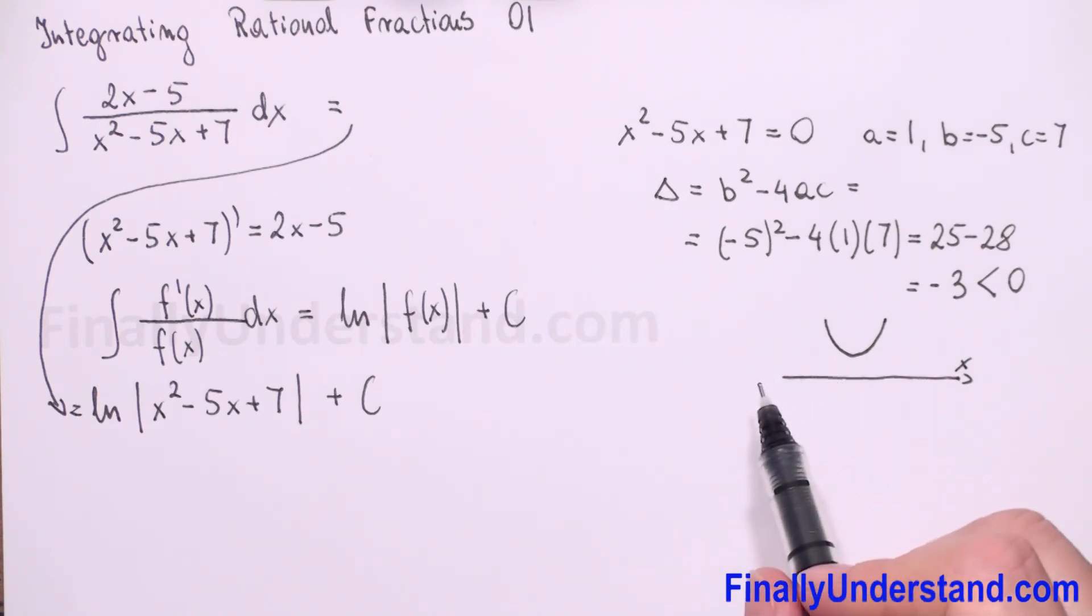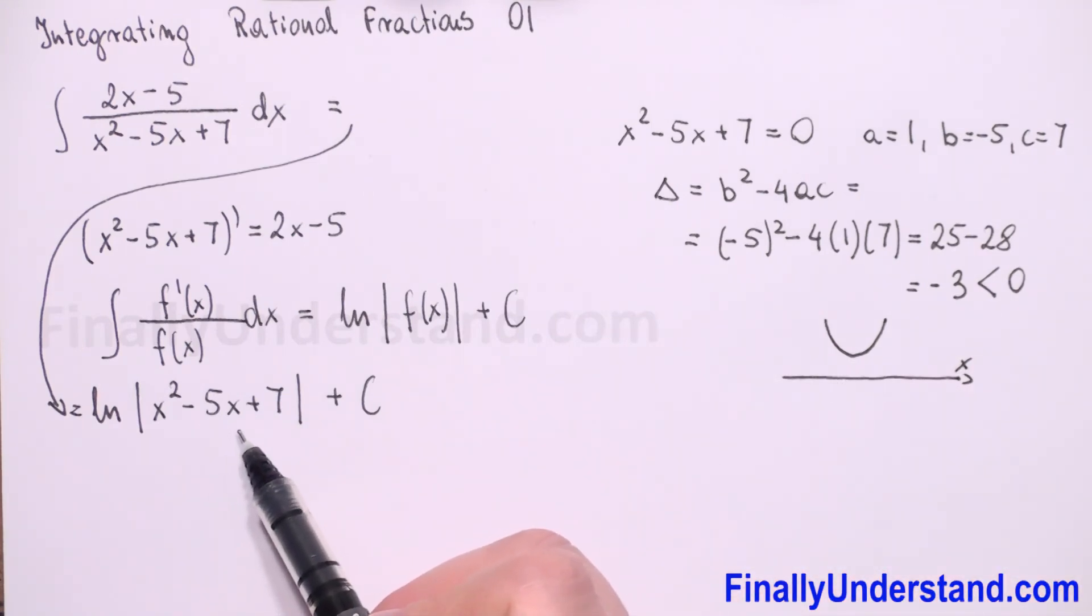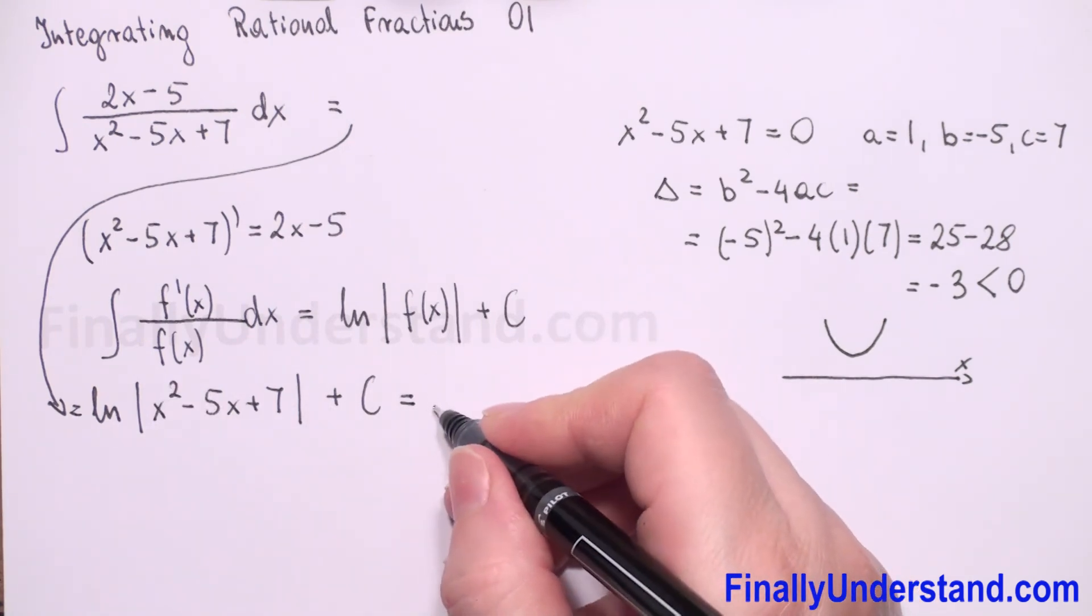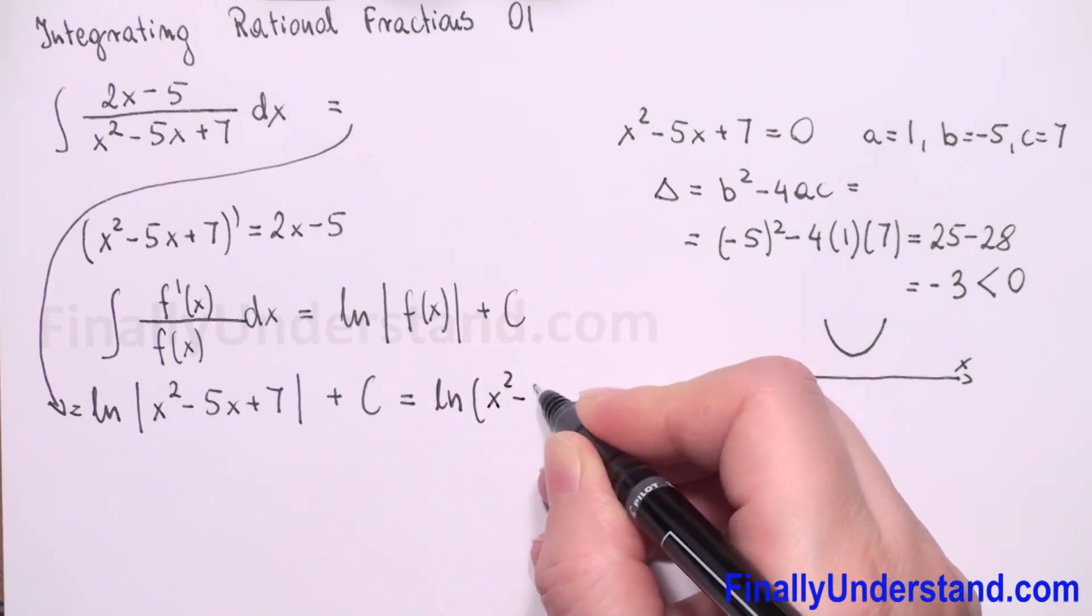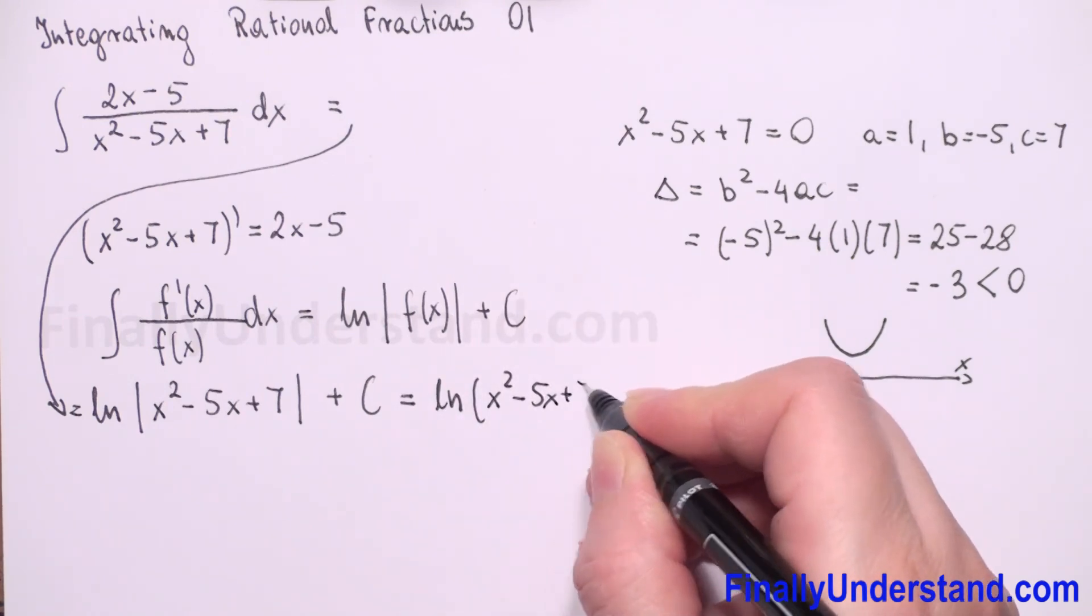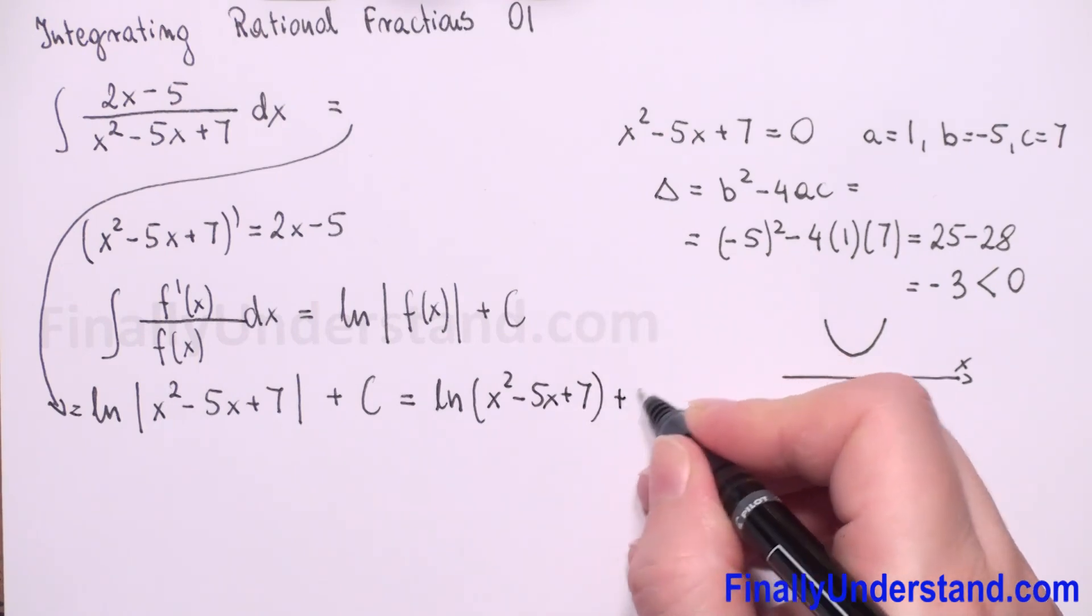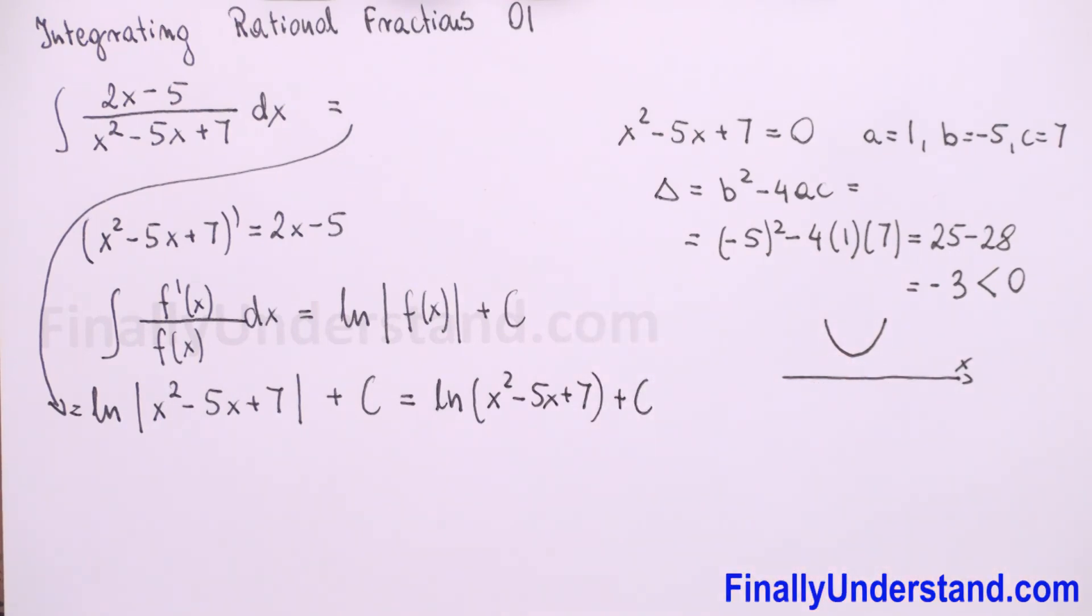So it means x square minus 5x plus 7 never gets negative values. So we can rewrite our solution and we don't need these absolute values. We have x square minus 5x plus 7 plus constant c. This is my solution.